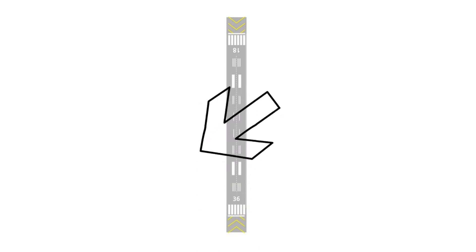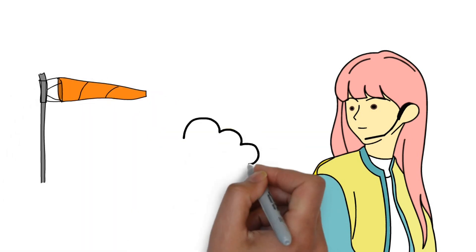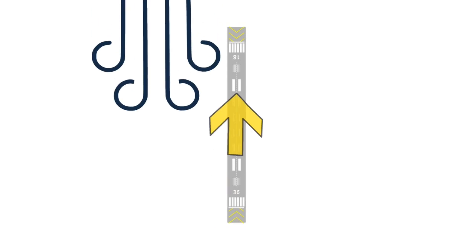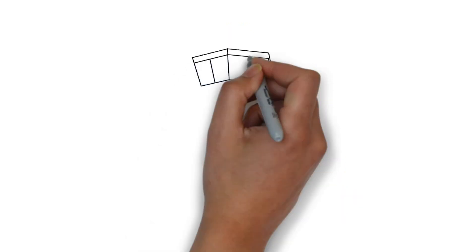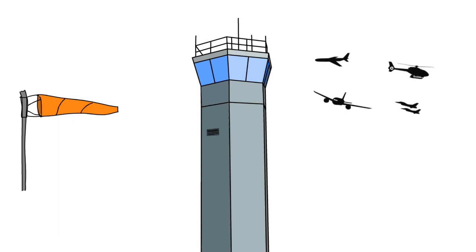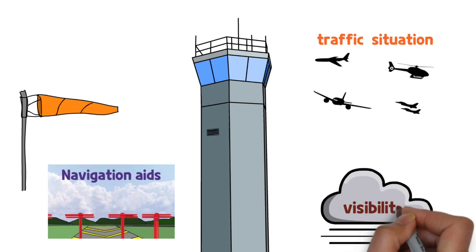2. Runway Change. The direction of a runway depends on the tower controller's decision. A tower controller has to monitor the wind's direction and velocity in real time and continuously check the weather forecast. At airports where the wind changes direction frequently, the runway direction also changes several times. Overall, the tower controller considers not only the wind, but also the traffic situation, navigation aids, and visibility for the change in runway.